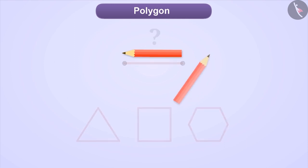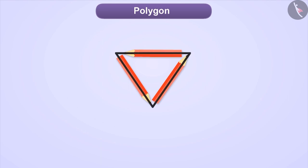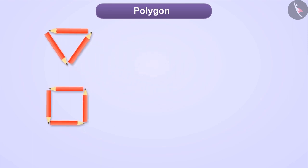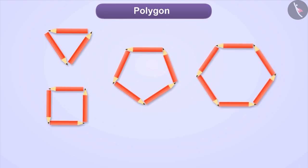Similarly, if we take two pencils and try to make a polygon out of them, then again we will not get a closed figure or a polygon. But if we take three pencils, then we can definitely make a polygon. Similarly, we can make polygons from 4, 5, 6 etc. pencils.